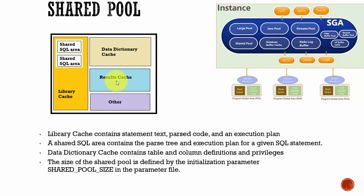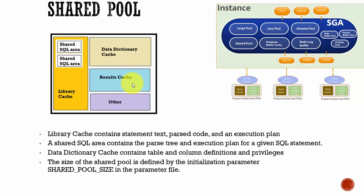If some other user executes a similar SQL statement — SELECT COUNT(*) FROM customer — it will not re-execute that SQL statement. It will go to the Results Cache, fetch the value 10, and return it to the user. To cache the result in the Results Cache, the user can use the RESULT_CACHE hint to tell Oracle Database to store the result of the SQL query. Or, if you want to store the results of all SQL queries, you can set the RESULT_CACHE_MODE initialization parameter.